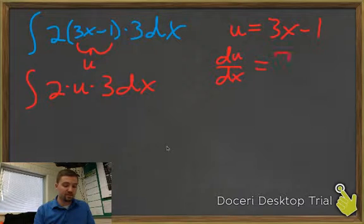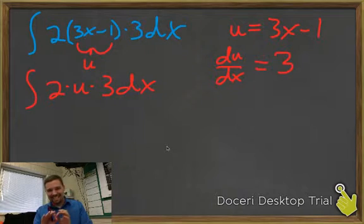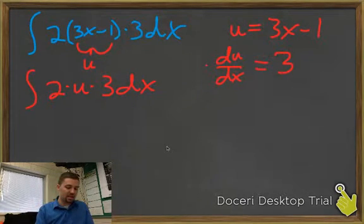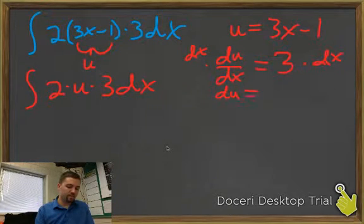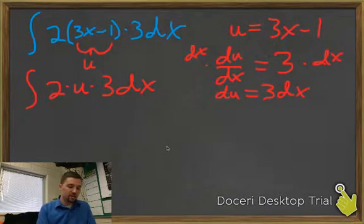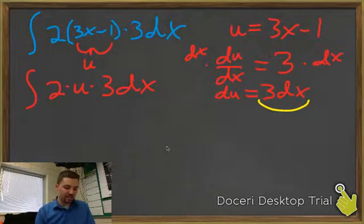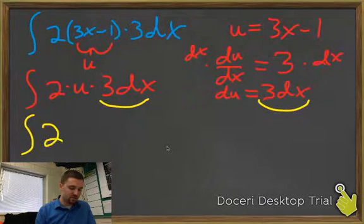The derivative of u with respect to x is just 3. And du/dx is kind of like a fraction — enough like a fraction that we can move this dx to the other side by multiplying. So then I end up with du equals 3 dx. I now see that I've got 3 dx here and 3 dx there, so I can make a substitution. The integral becomes the integral of 2u du.